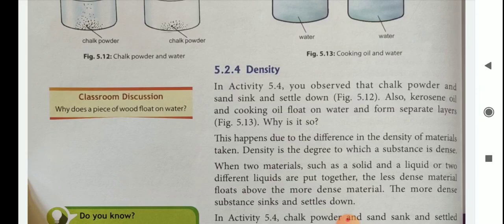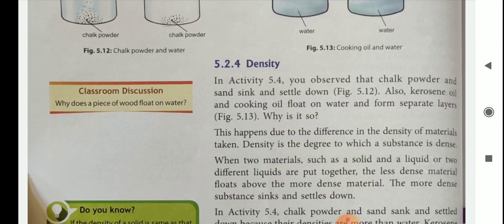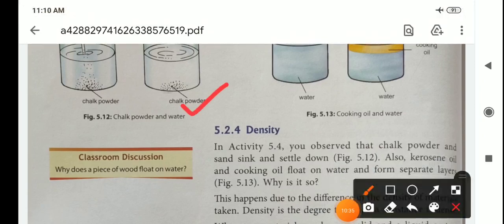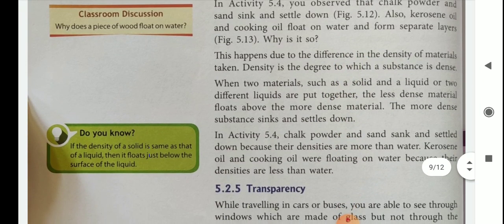This happens due to the difference in density of materials. Density is the degree to which a substance is dense. When two materials such as a solid and a liquid, or two different liquids, are put together, the less dense material floats above the more dense material. Chalk powder is more dense than water so it settles down; oil is less dense than water so it floats. Chalk powder and sand sink because their densities are more than water; kerosene oil and cooking oil float because their densities are less than water.